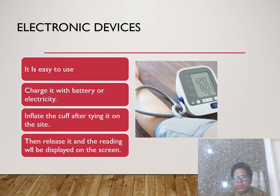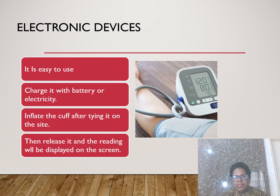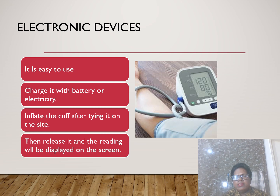An electronic device for measuring BP is very easy to use. It has a screen that displays BP readings. Tie the cuff on the arm, inflate it, then slowly release it and watch the screen — the BP will be displayed automatically.